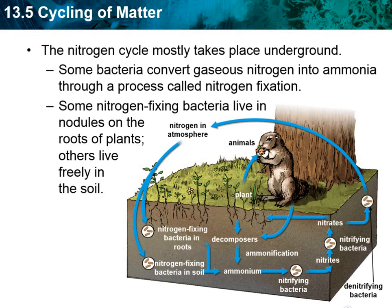The plant creates compounds from the nitrogen it takes in. Animals eat the plant and get the nitrogen they need from it. Nitrogen goes into helping make proteins, amino acids, and DNA. We get that nitrogen from the plants, and then we release it as a waste product through excretion. Then bacteria break it down and put that nitrogen back into the atmosphere or soil, where plants can use it to start the process over again.